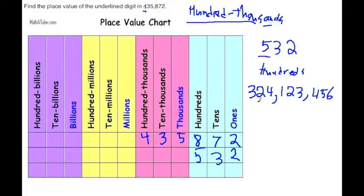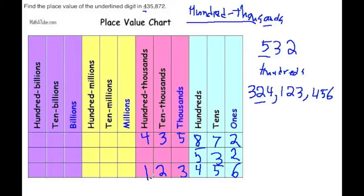The underlined digit we're going to find the place value of is the two here. We write the rightmost number, which is six, then five, four, three — can you predict what's next? Two. Then one, then four, two, and three.